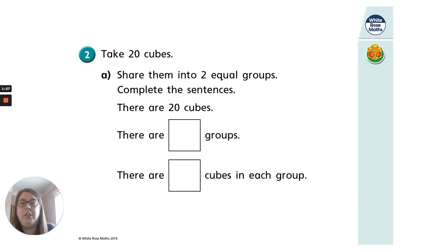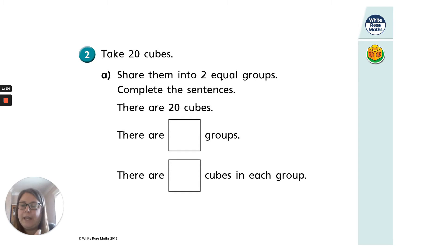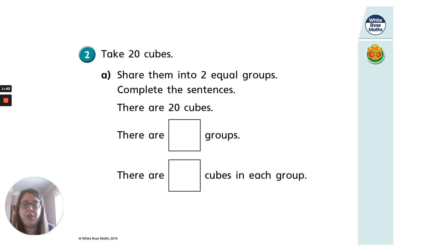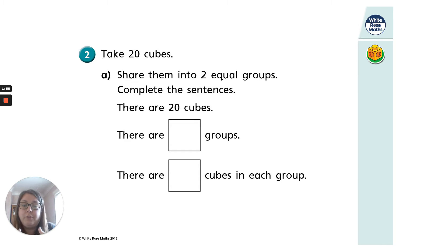So let's take 20 cubes this time. If we share them into two equal groups, can you complete the sentence? You might need to get 20 pieces of Lego, 20 dolls, cars, sticks, or whatever you've got in your house — you might just want to draw 20 counters. Can you split them into two equal groups? Draw yourself two boxes and 20 counters, put them into two equal groups. When you've drawn one, cross it out so you know you've drawn it. So how many groups and how many cubes are there in each group? Pause the video and off you go.